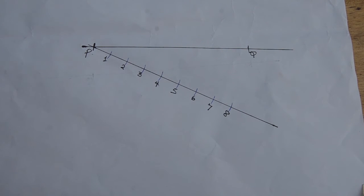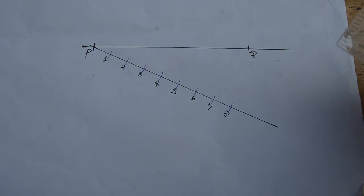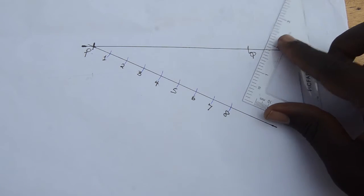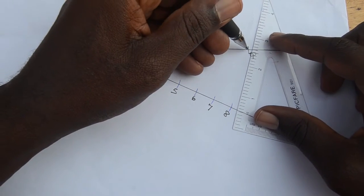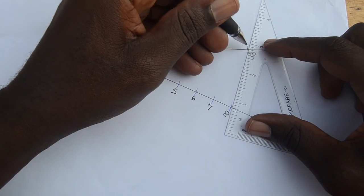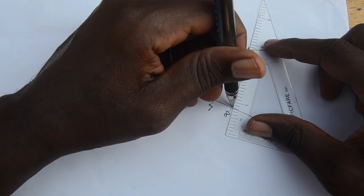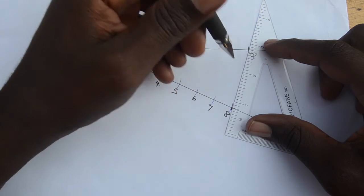Join the last division, which in this case is eight, to the other side of the line, which in this case is Q. Then with the help of a set square and a straight ruler, draw lines from the rest of the points parallel to eight Q.